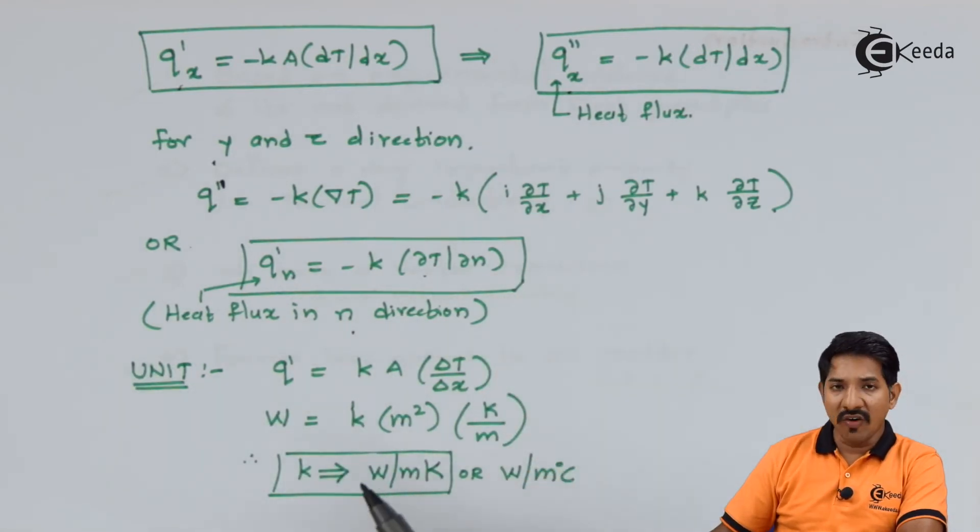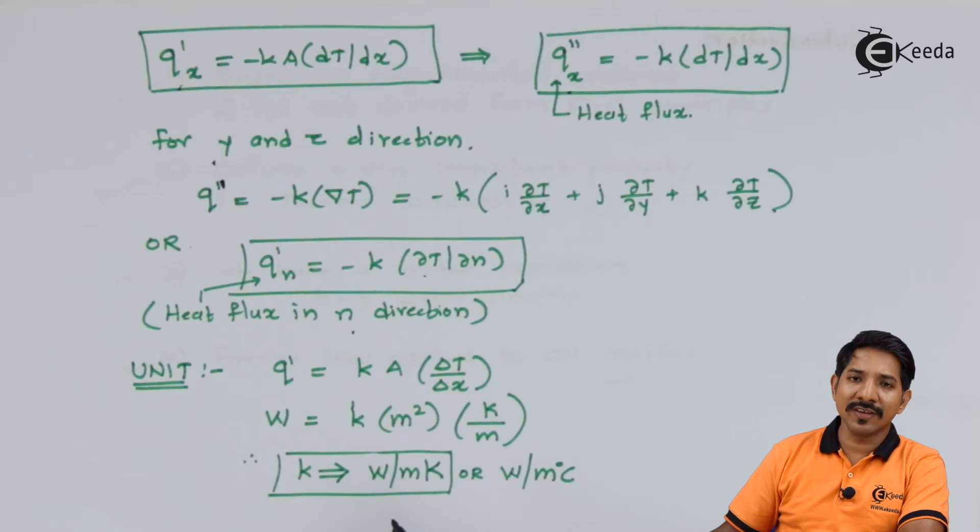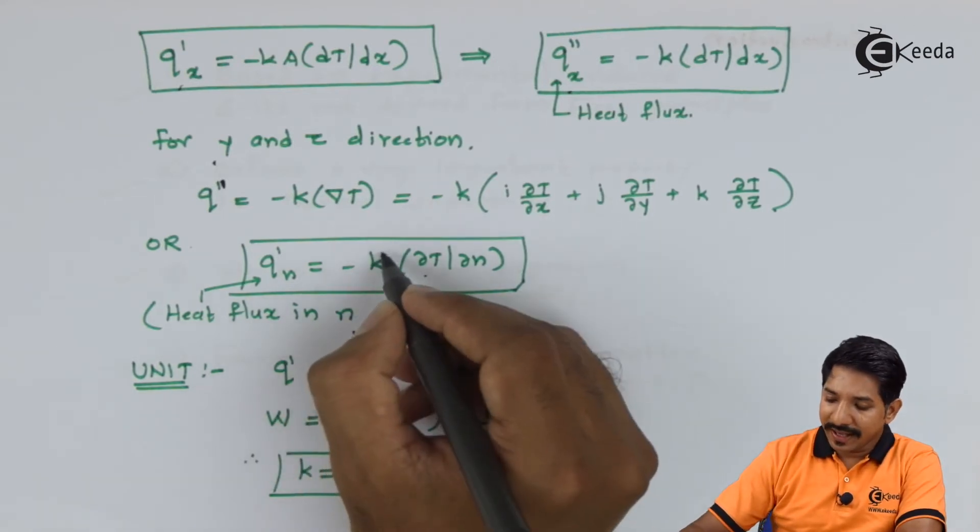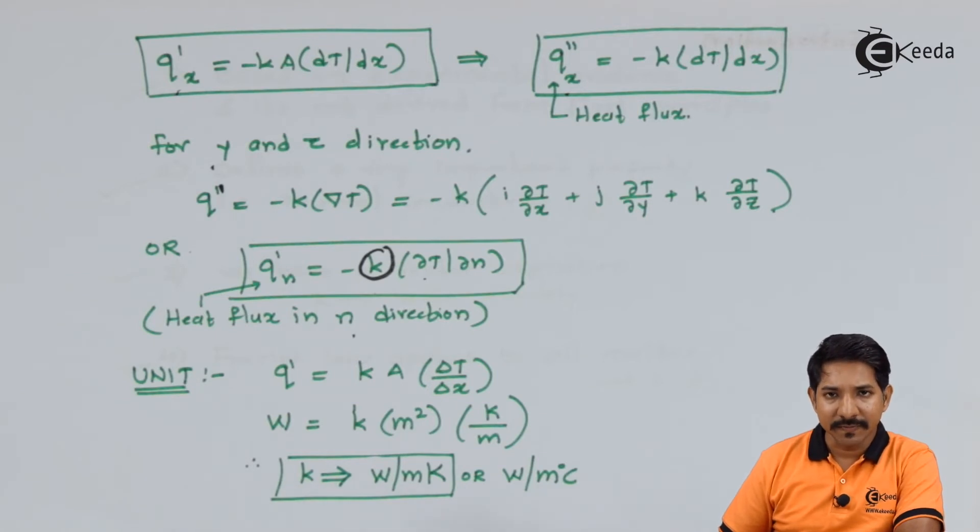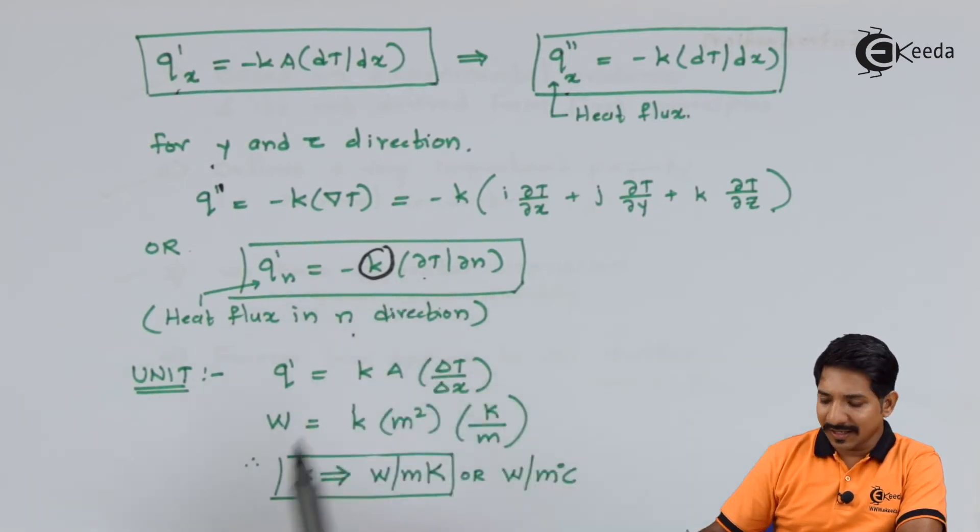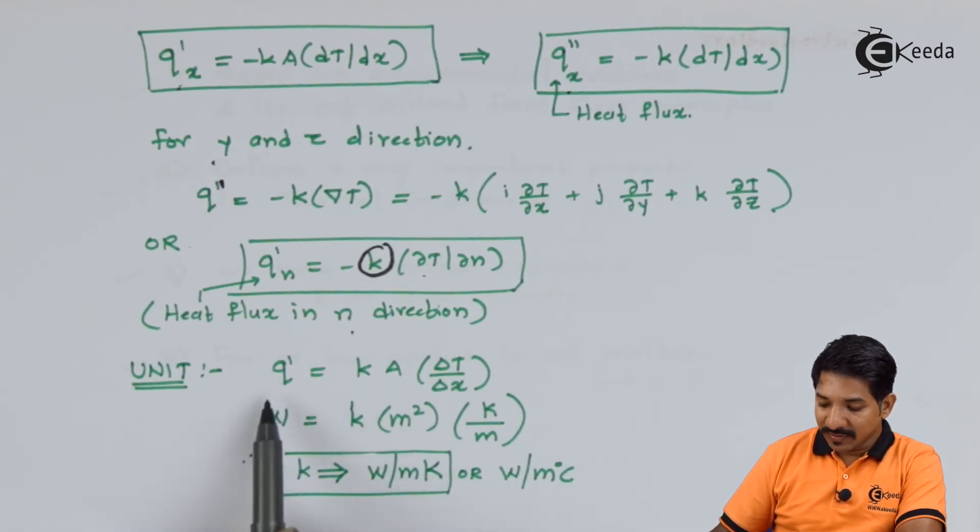Now from this we get to one very important thermophysical property called K. Now what is K? K is thermal conductivity. What is the unit of thermal conductivity?